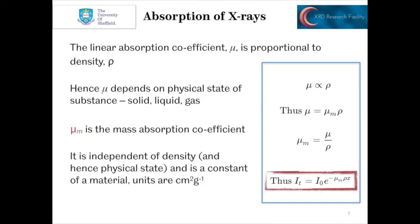The linear absorption coefficient is proportional to density rho, so it depends on the physical state of the material — whether it's a solid, liquid, or gas. This gives rise to the mass absorption coefficient, mu_M. This can be written as: IT equals I₀ times the exponential of minus mu_M times rho times X, where rho is the density and X is the sample thickness. The mass absorption coefficient is independent of density and physical state — it's a constant of the material, with units of cm² per gram.